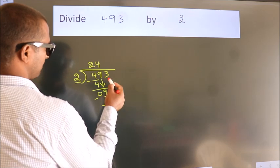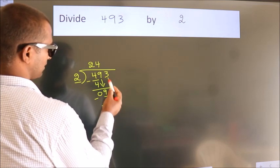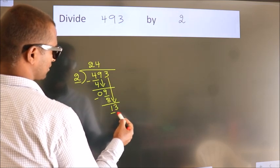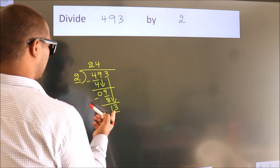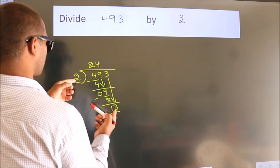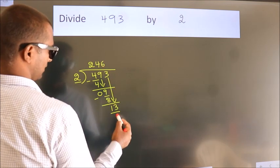After this, bring down the beside number. So 3 down. So 13. A number close to 13 in 2 table is 2 six 12.